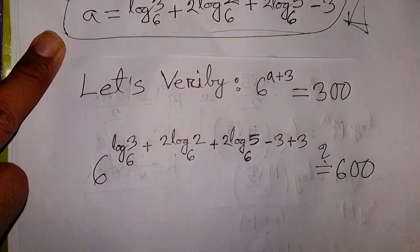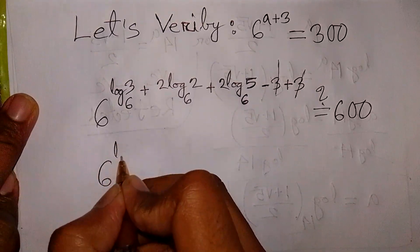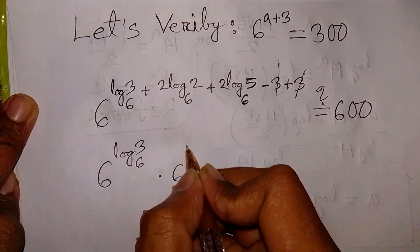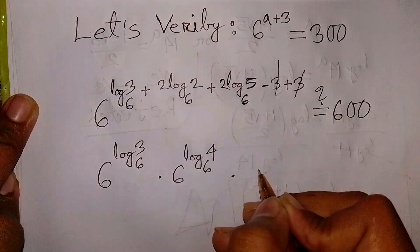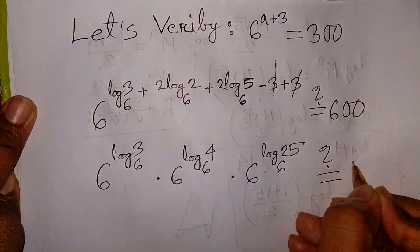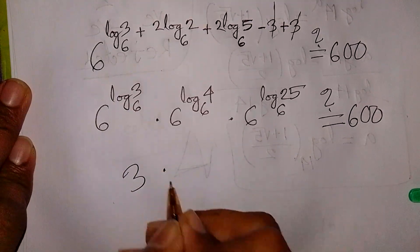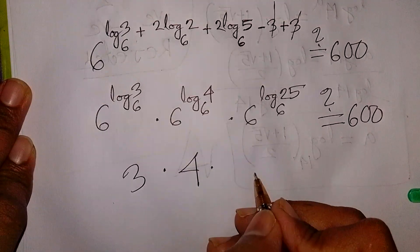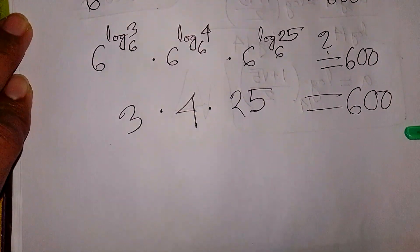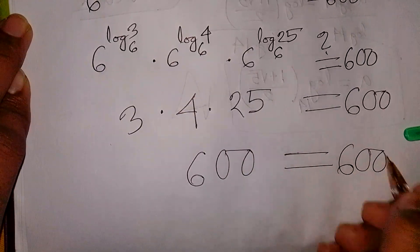Let's verify. We have 6 to the power of (A plus 3). The negative 3 and positive 3 cancel out, giving us 6 to the power log 3 base 6, times 6 to the power log 4 base 6, times 6 to the power log 25 base 6, which equals 3 times 4 times 25, which equals 300. Left side equals right side — verified!